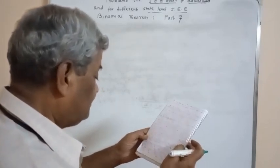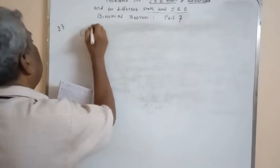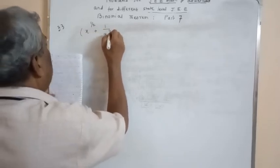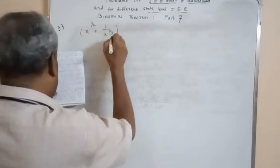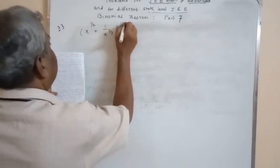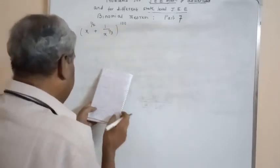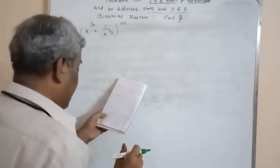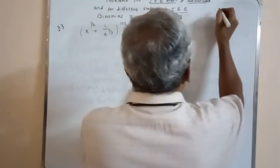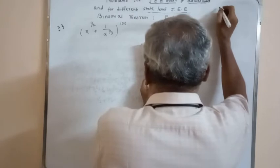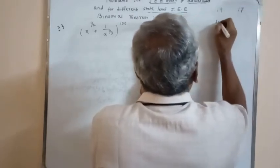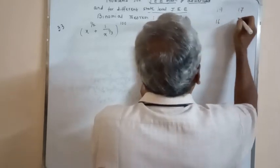Problem number 33. The number of terms of (x^(1/2) + x^(-1/3))^100 containing integral powers of x. Options: 19, 17, 16, and 12.